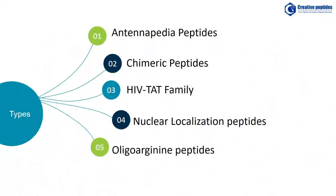Since the first CPP, transactivator of transcription, was discovered, a large number of CPPs have been investigated, such as polyarginine peptides, octa-arginine, nona-arginine, and dodeca-arginine. CPPs could be mainly classified into five groups based on their physicochemical properties: cationic peptides, hydrophobic peptides, amphipathic peptides, proline-rich and antimicrobial peptides, and chimeric peptides. They could also be classified based on their origin or function, such as Antenopedia peptides, chimeric peptides, HIV-TAT family peptides, nuclear localization peptides, and oligo-arginine peptides.